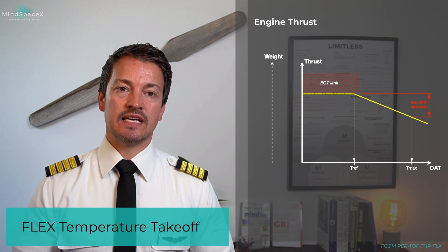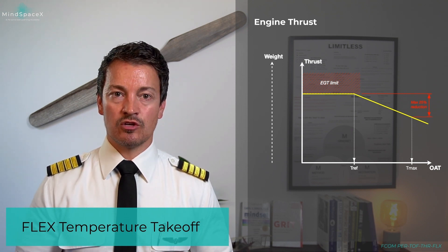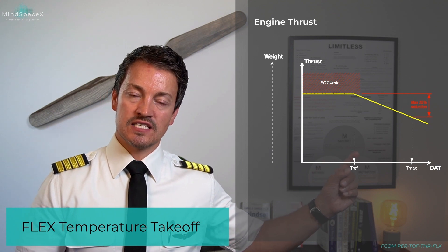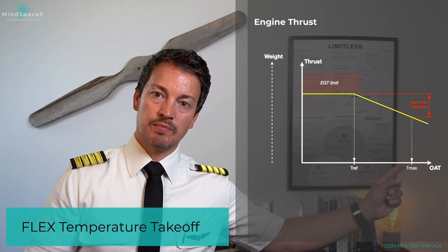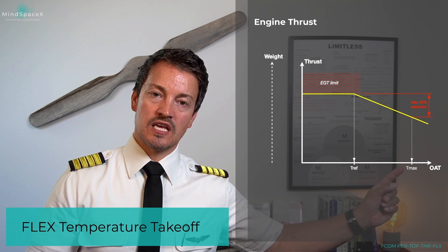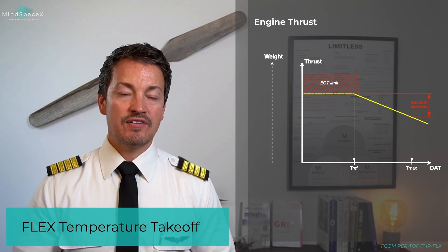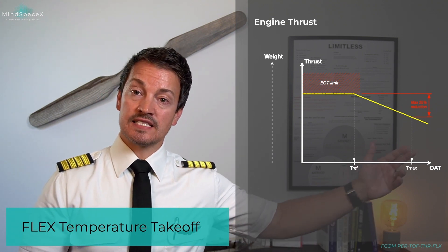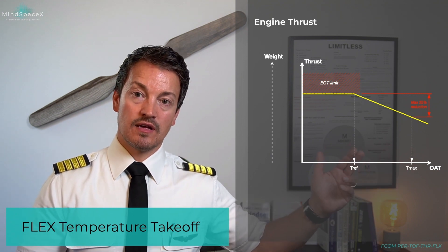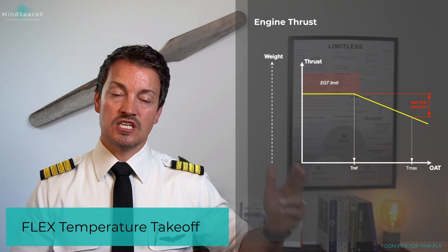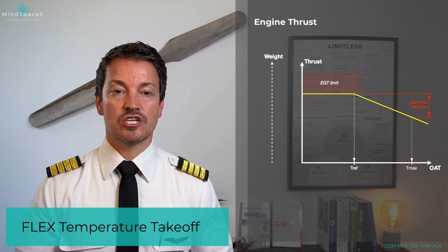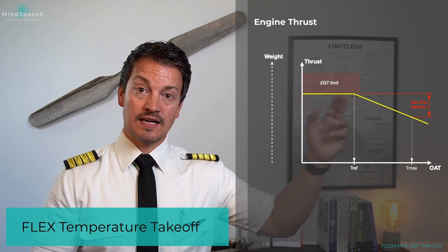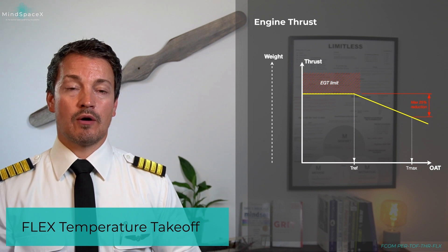Translating that 25% limit for this particular engine into a flexible temperature gives us a maximum flexible temperature known as T-flex max. When we calculate the T-flex for today, we make sure our T-flex is above TREF but below T-flex max. Any T-flex value higher than T-flex max is not allowed, and any value below TREF or actual outside conditions will not be beneficial — we'll simply be flat-lining at maximum TOGA power anyway.